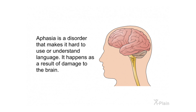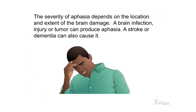In summary: aphasia is a disorder that makes it hard to use or understand language. It happens as a result of damage to the brain. The severity of aphasia depends on the location and extent of the brain damage. A brain infection, injury, or tumor can produce aphasia. A stroke or dementia can also cause it.